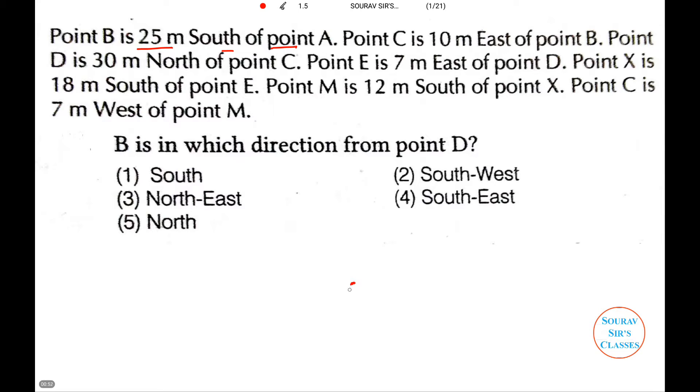Point B is 25 meters south of point A. So this will be there and we have this part to be equal to 25 meters. Then point C is 10 meters east of point B.